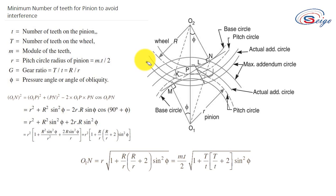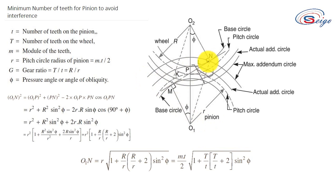Today we are going to discuss the minimum number of teeth for a pinion to avoid interference. Here is the figure. This is the arc corresponding to the base circle, this is the pitch circle, and the actual addendum circle and maximum value of addendum circle for the gear wheel. Here also you have a base circle, pitch circle, actual addendum circle, and the maximum value of addendum circle for the pinion. MN is the common tangent for both base circles. Interference is the phenomenon when the tip of the tooth undercuts the root on its mating gear. M and N are the interference points.